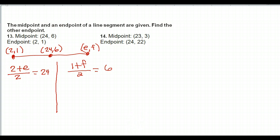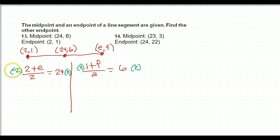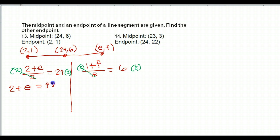Multiply by 2 on both sides. Multiply by 2, multiply by 2 — these 2's will cancel each other out. That leaves us with 2 plus E equals 48. That leaves us with 1 plus F equals 12.